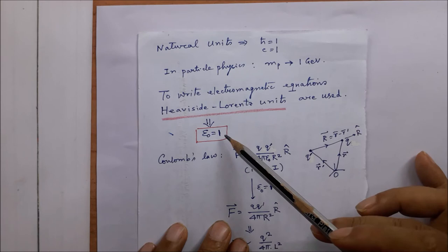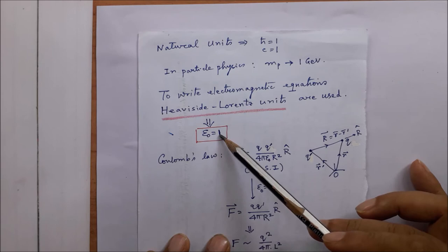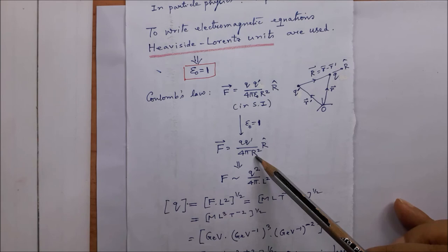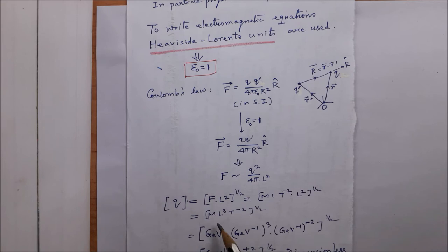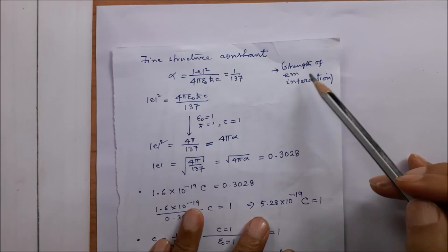Heaviside-Lorentz units are used to tackle this problem. In the Heaviside-Lorentz natural unit system, epsilon-0 is set equal to 1, so Coulomb's law takes a simplified form. From this we can find the dimension of charge: Q is the square root of F times L-squared. Substituting the dimensions explicitly and using GeV for M, GeV-inverse for L and T, we find that charge is dimensionless in Heaviside-Lorentz units.